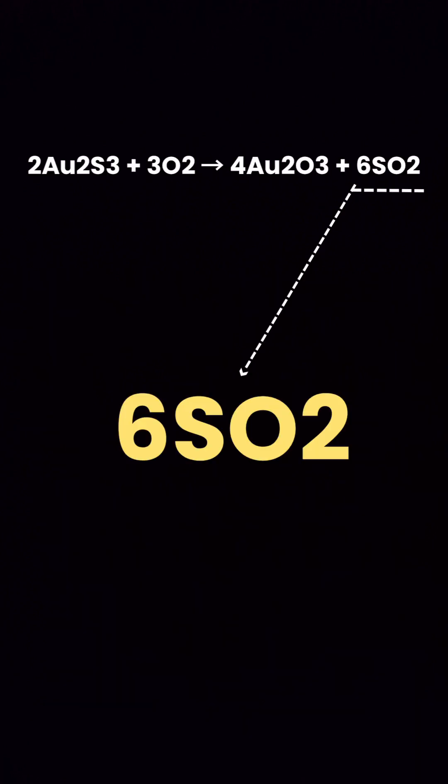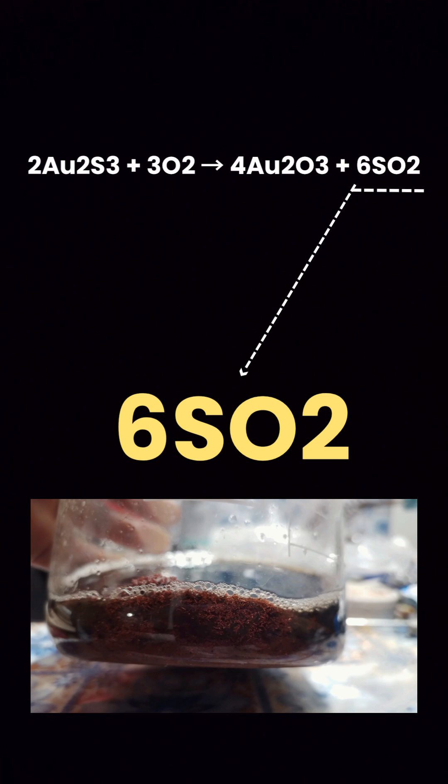Sulfur Dioxide. Finally, the sulfur that was once part of gold sulfide combines with oxygen and transforms into sulfur dioxide (SO2). Sulfur dioxide is a gas that is commonly released into the atmosphere and is easily recognizable by its sharp, pungent odor. This gas is one of the byproducts of this reaction and is often produced in nature, having some environmental impacts.